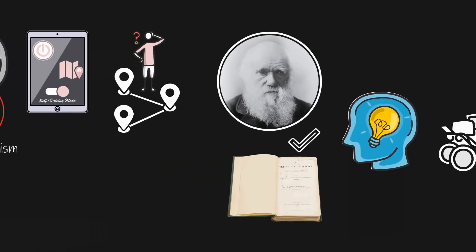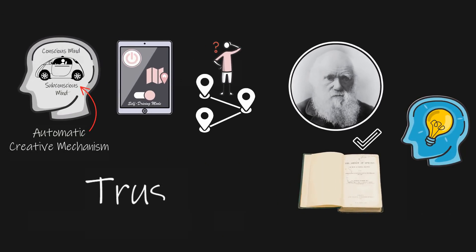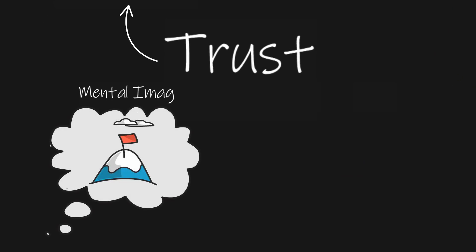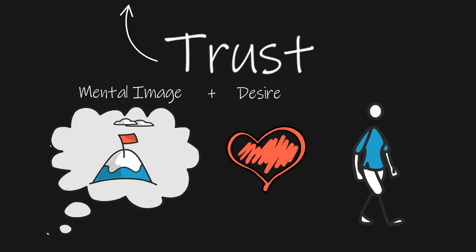In order for your creative mechanism to work for you like it did for Darwin, you need to trust it. You must imagine a clear picture of what you want, establish a strong desire to realize that image, initiate action towards your goal, and then trust that your creative mechanism will find a way.